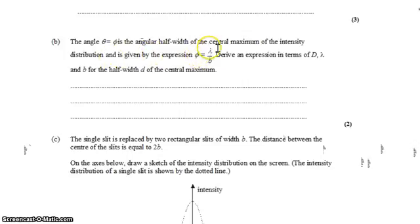We want to derive an expression in terms of d, lambda, and b for the half-width of the central maximum, d.